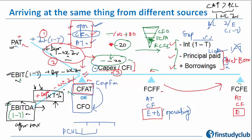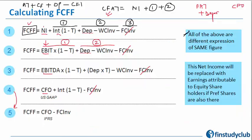In PAT and EBIT, depreciation has been deducted, so you add back the full depreciation. But from EBITDA it has not been deducted — so no full add-back. However, depreciation brings tax benefits, so at least the tax portion must be considered. Working capital investment stays as is. So for EBITDA, the accrual-to-cash adjustment becomes: + depreciation × T − working capital investment.